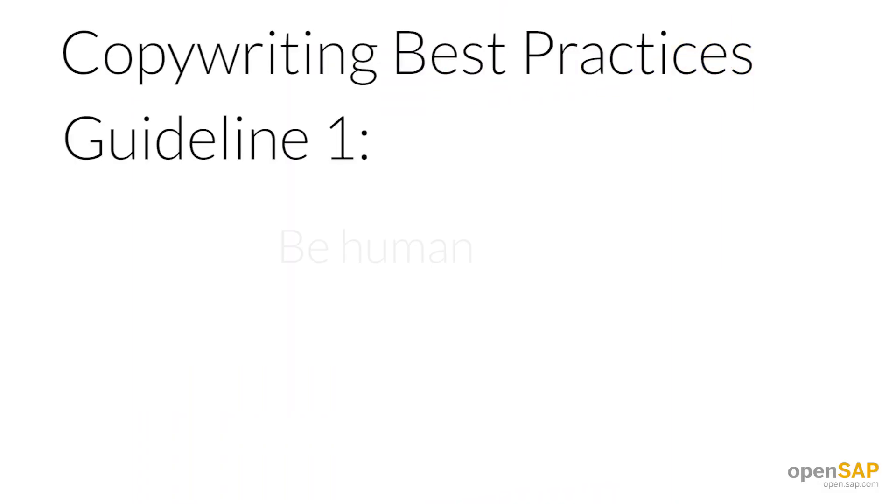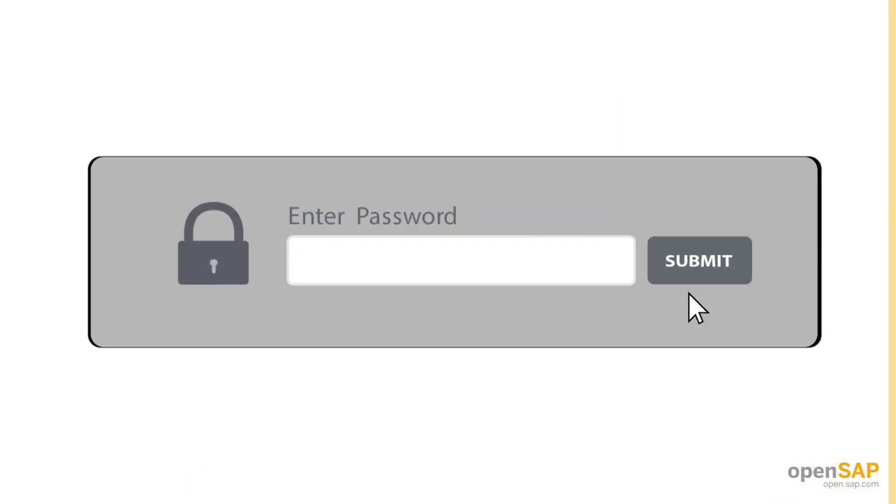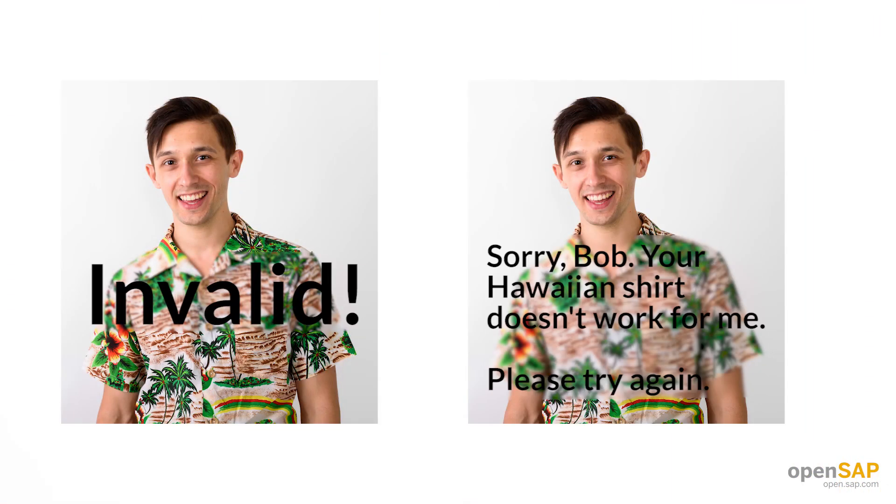Guideline 1: Be human. If you've watched the whole class, you've picked up on this by now. We're writing software for people, and we have to eliminate computer language from our interface. The password process is the worst. We all get our passwords wrong from time to time. The majority of the time, you might see a message like, 'Your password is invalid.' Now, 'invalid' is the definition of a computer word. People don't say it — 'Hey Bob, your Hawaiian shirt, that's invalid.' We just don't talk like that.